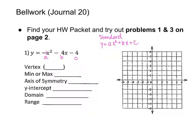Standard form is great if you want to find the y-intercept very quickly because it's always your c value. In this case the y-intercept is at negative four, so I'm going to plot it on the y-axis — the y-intercept is at (0, −4). Remember, the y-intercept is a coordinate.